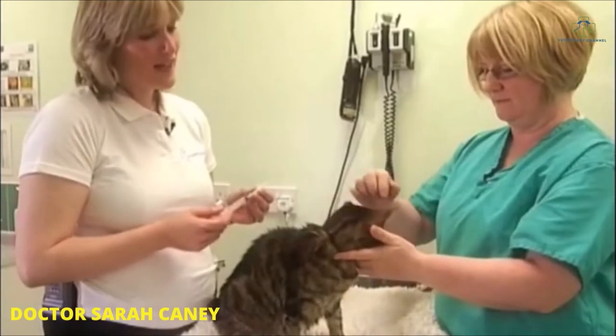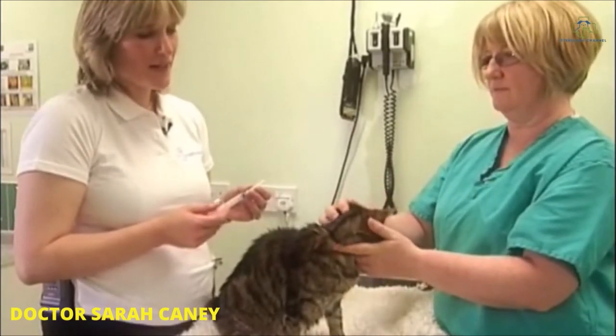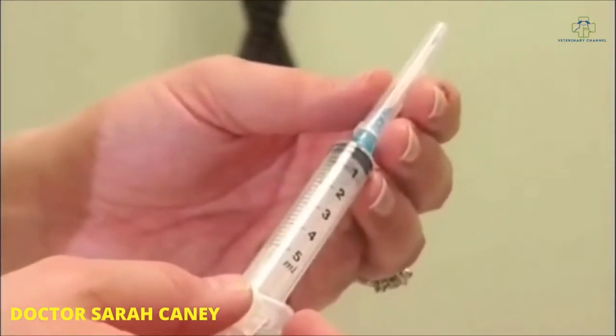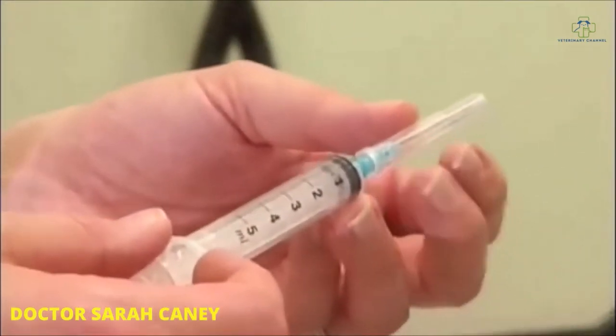The equipment that I use to collect a cystocentesis sample is a five or ten mil syringe and a 23 gauge needle, usually using a one inch long needle.